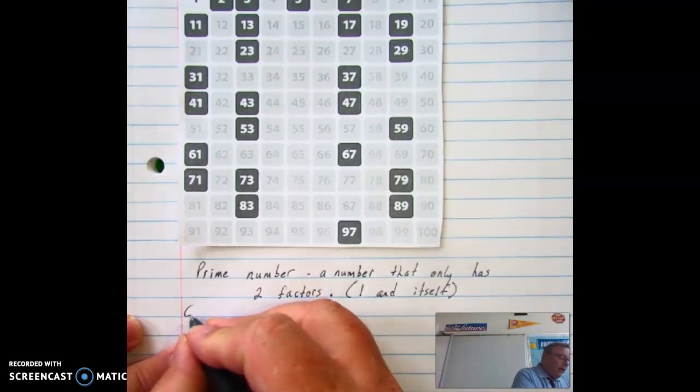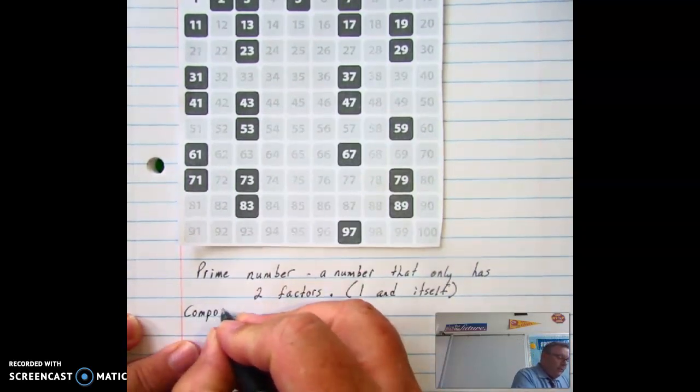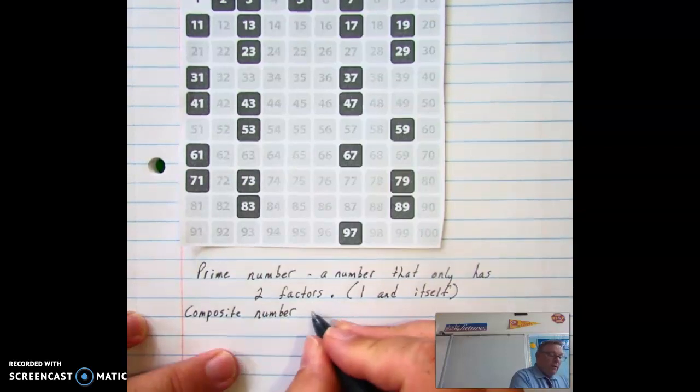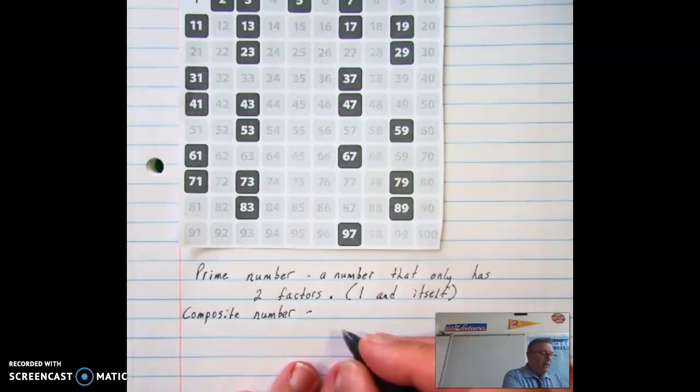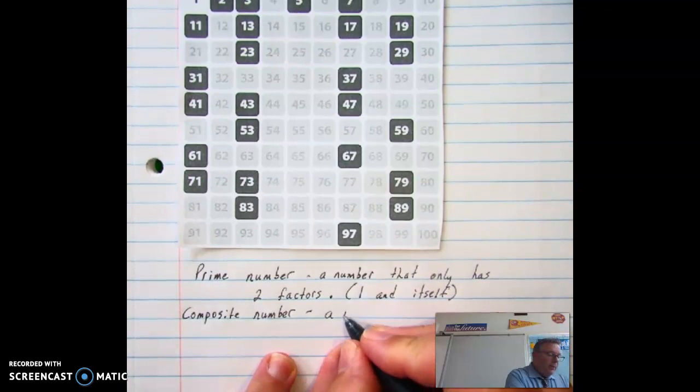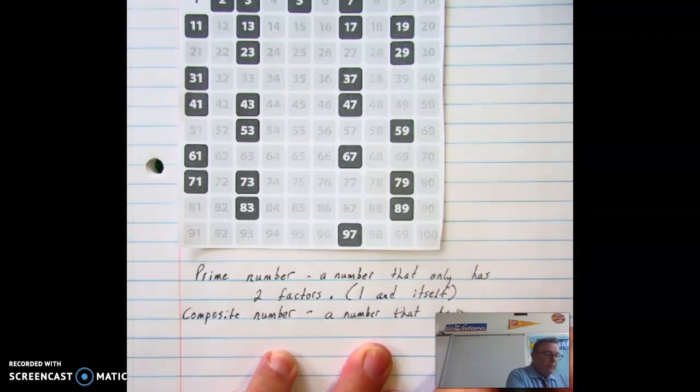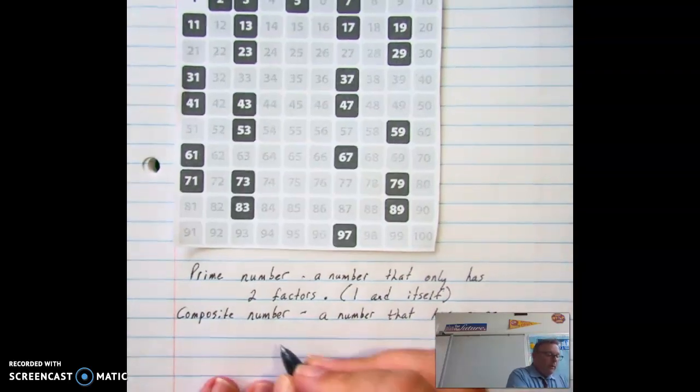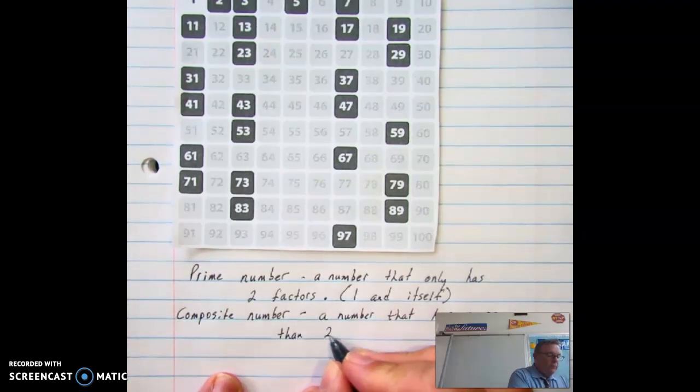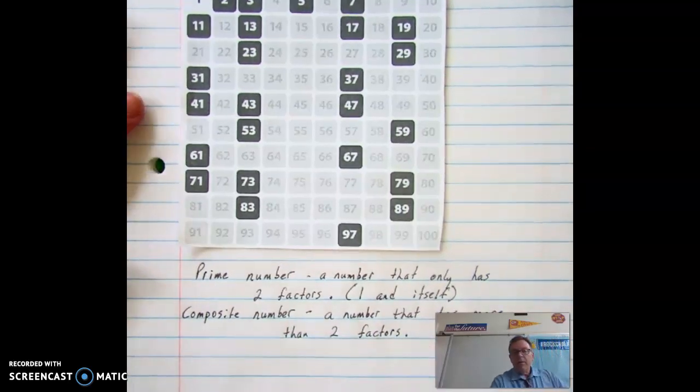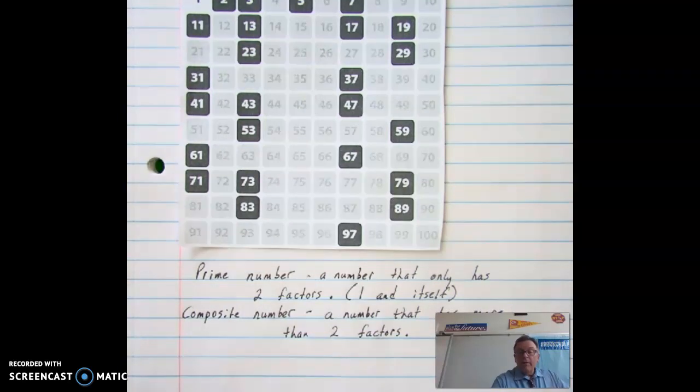And that is called a composite number. So a composite number, a really simple definition for that is it is a number that has more than two factors. So any number you can have as many as you want. The only thing is it has to have more than two. So before we start breaking down the composite numbers, let's define what a factor really is.